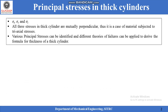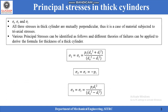Therefore various principal stresses can be identified and different theories of failure can be applied to derive the formula for thickness of a thick cylinder. It can be noted from the previous lecture that the inner surface of a thick cylinder is the most heavily stressed. Moreover, tangential stress is higher than the radial and longitudinal stress. Therefore the first principal stress is equal to tangential stress, given by pi(Do² + Di²) / (Do² − Di²).